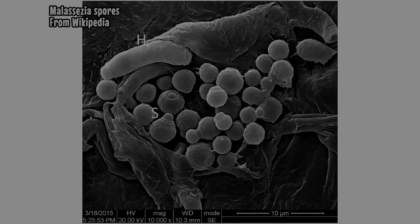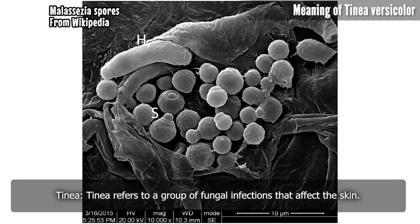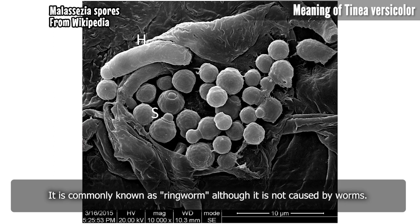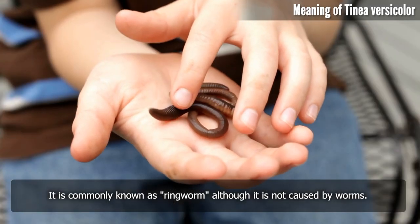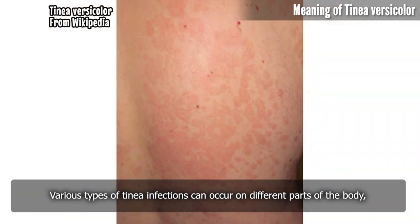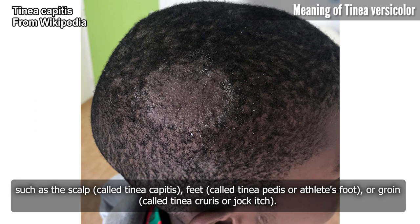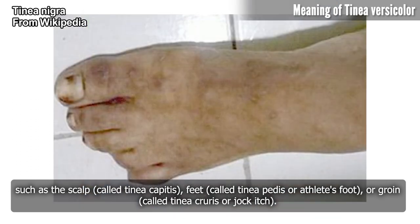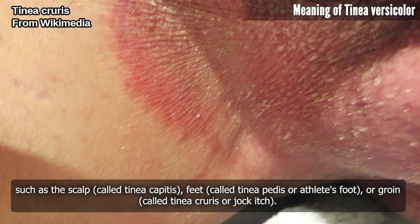Tinea refers to a group of fungal infections that affect the skin. It is commonly known as ringworm, although it is not caused by worms. Various types of tinea infections can occur on different parts of the body, such as the scalp (tinea capitis), feet (tinea pedis or athlete's foot), or groin (tinea cruris or jock itch).